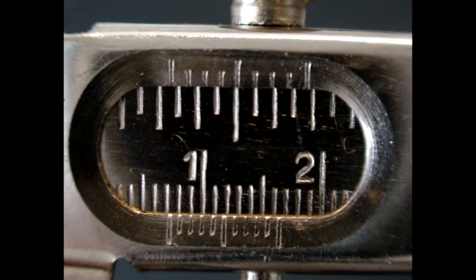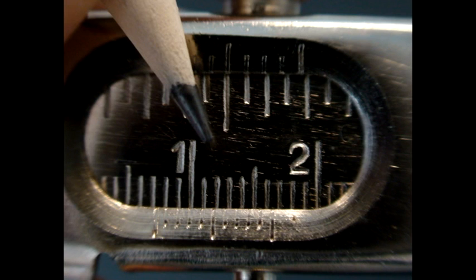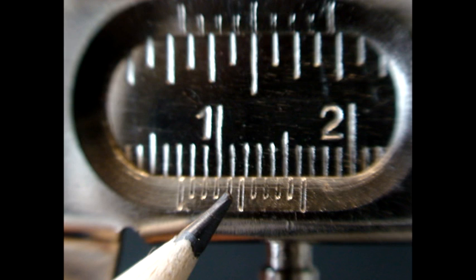To read the vernier calipers, the bottom two metric scales are needed. The scale on the main part of the measuring blade is marked in millimeters. The scale on the external jaw blade of these vernier calipers is marked in tenths of a millimeter.